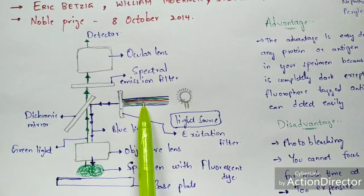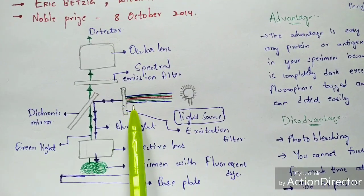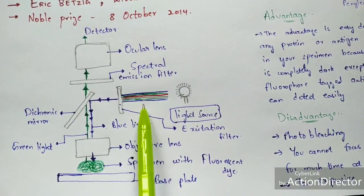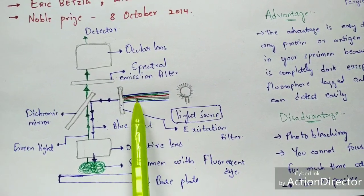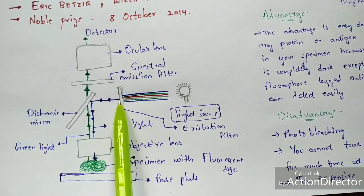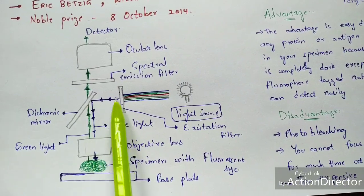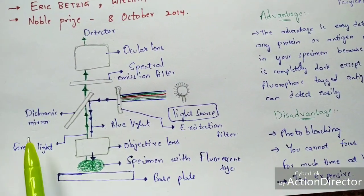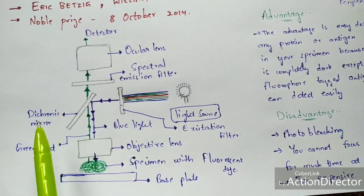From the light source, light is emitted and falls upon the excitation filter. Since light consists of different colors, the excitation filter selects a suitable wavelength and allows only blue color light to be emitted out. This blue color light is then allowed to fall upon the dichroic mirror.